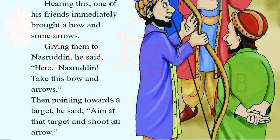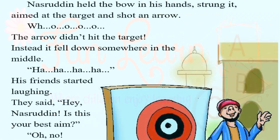His friends brought a blade and a spear, and gave them to Nasiruddin, saying: 'Here, Nasiruddin, take this bow and arrows and this sword.' Then, pointing towards a target, they said: 'Aim at the target and shoot an arrow.' Nasiruddin held the bow, aimed at the target and shot the arrow — but the arrow did not hit the target.